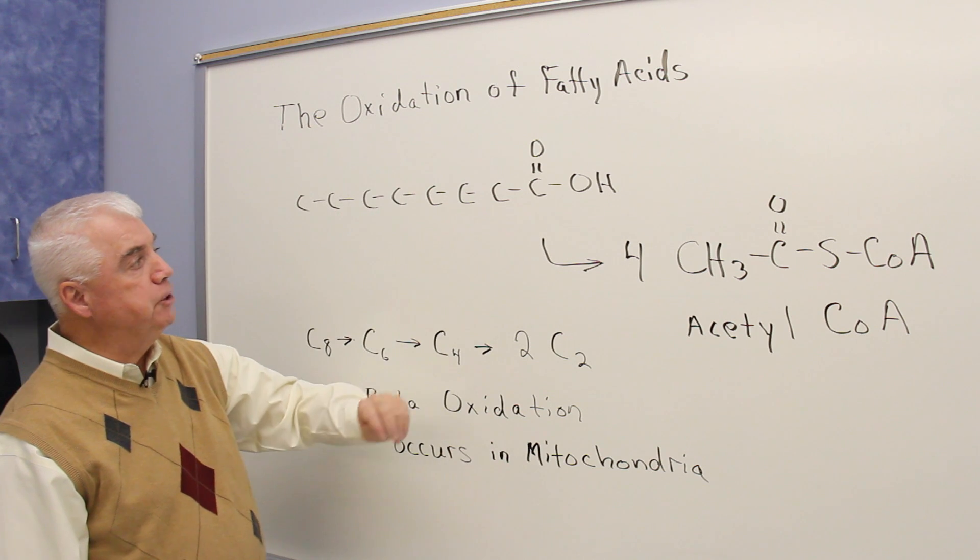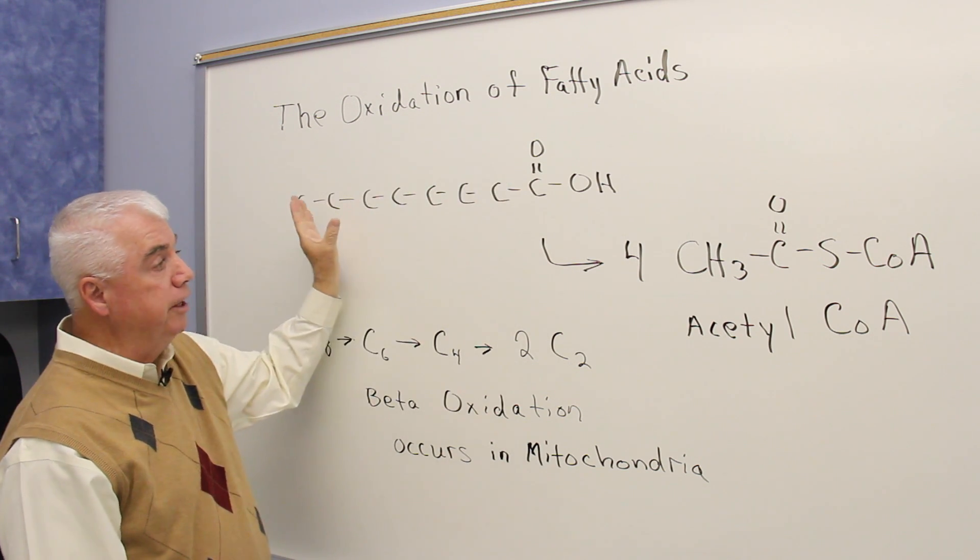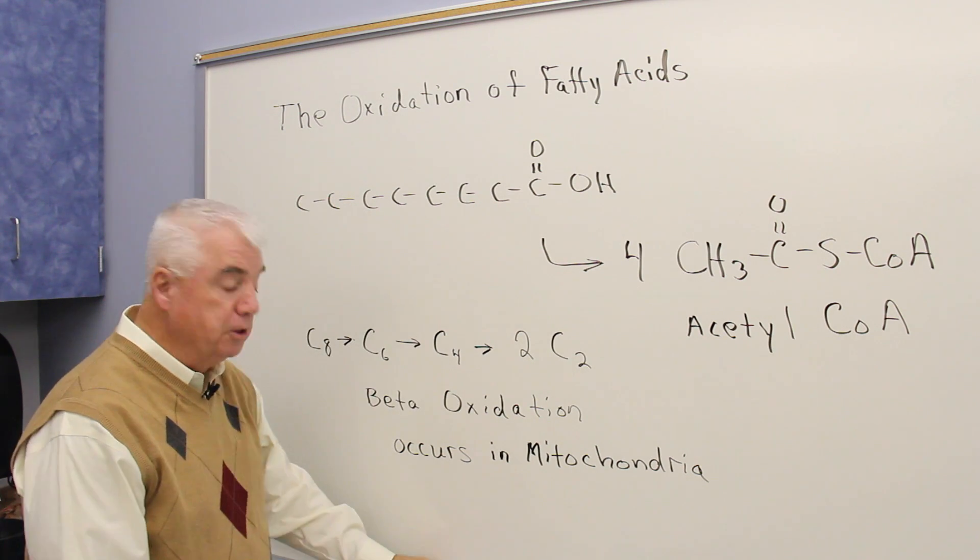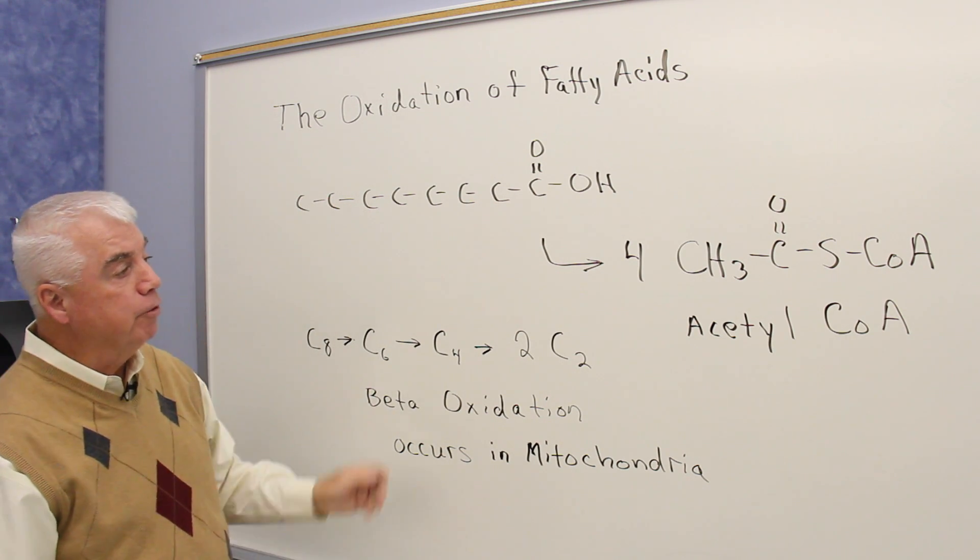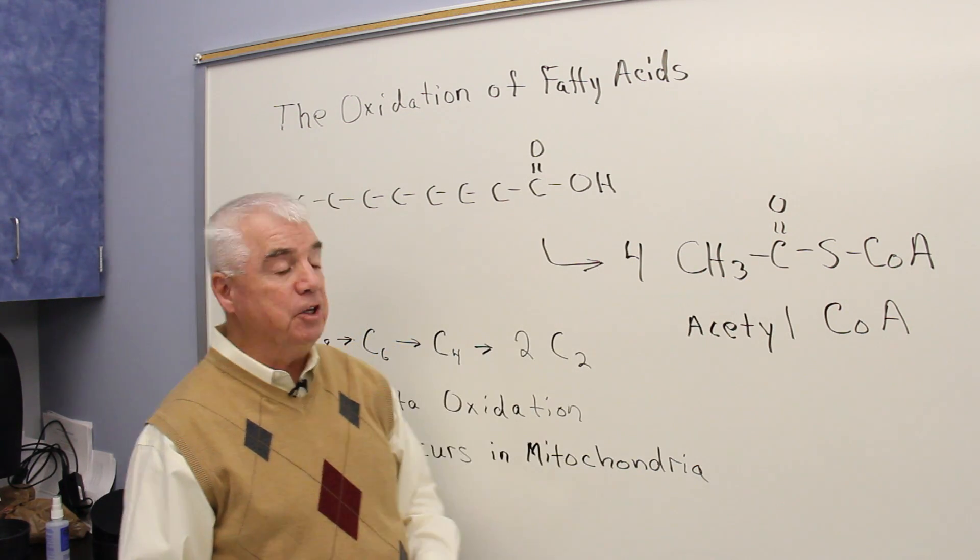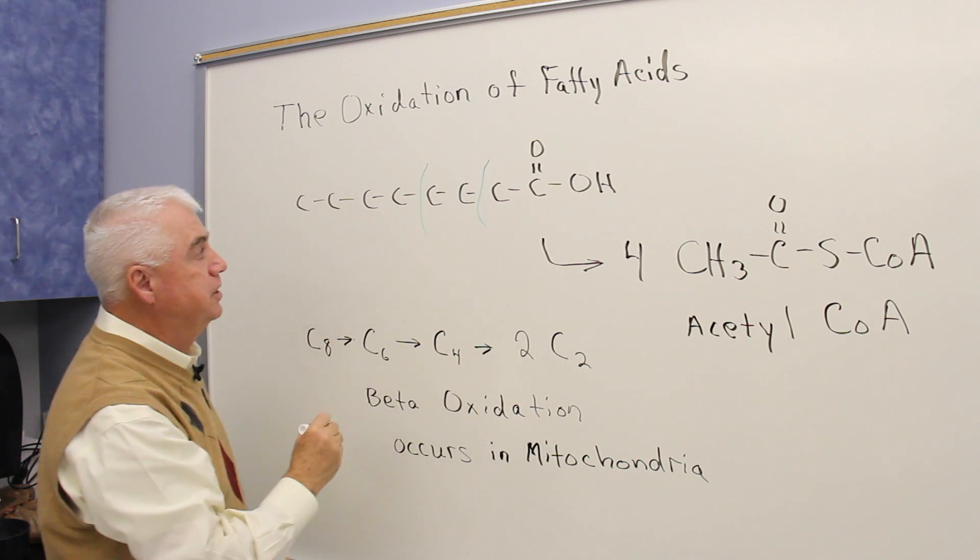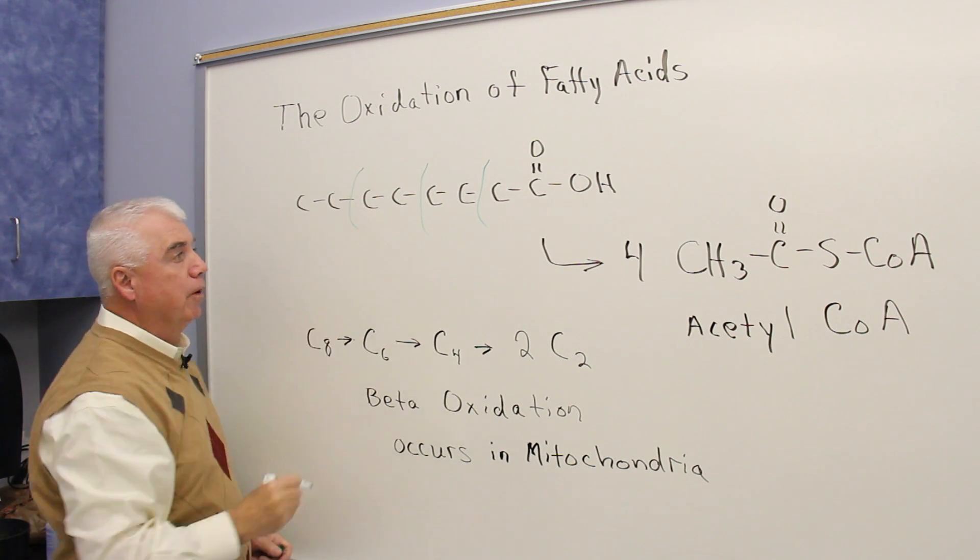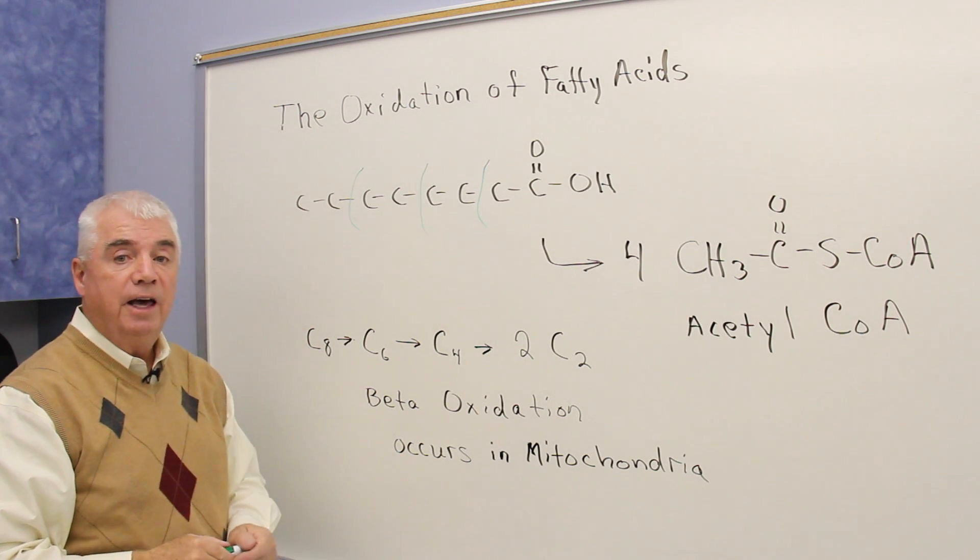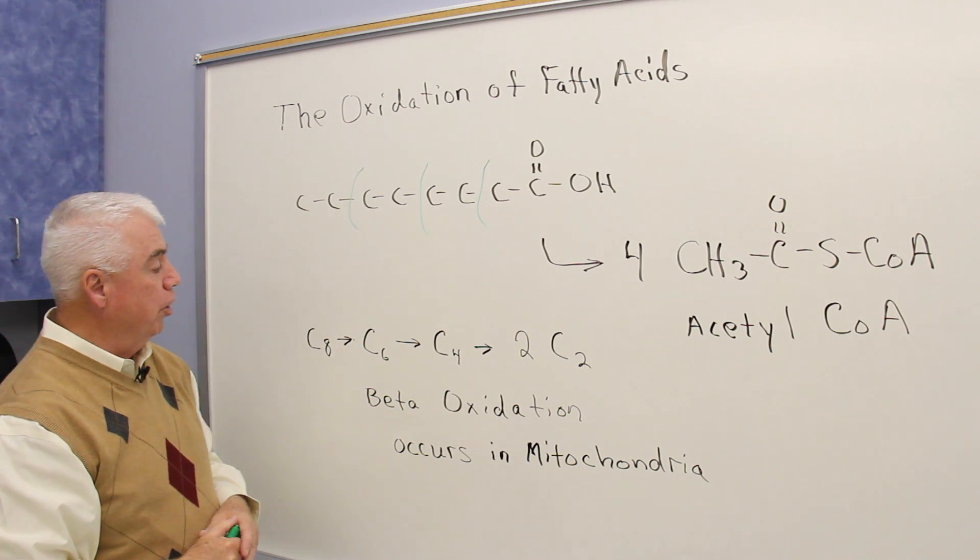In this oxidation process, fatty acids, which are usually even numbered, are broken down two carbons at a time. And every one of those two carbon units produces acetyl-CoA. That's an overview of the oxidation process that occurs.